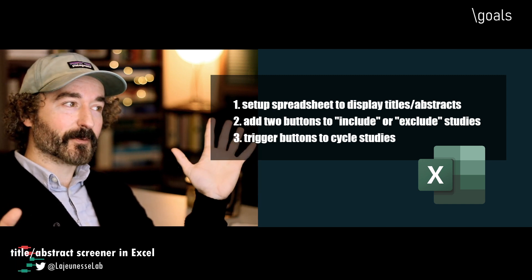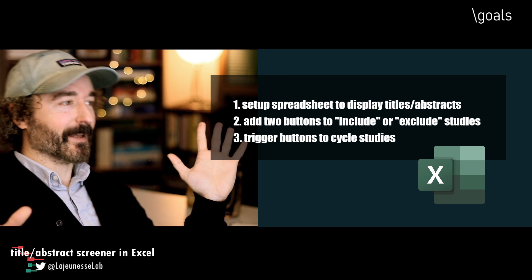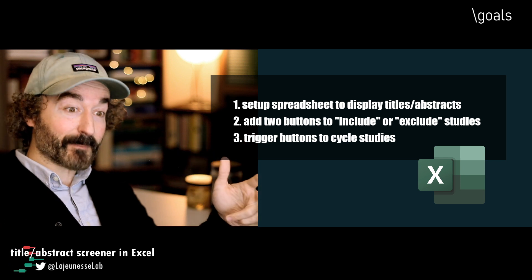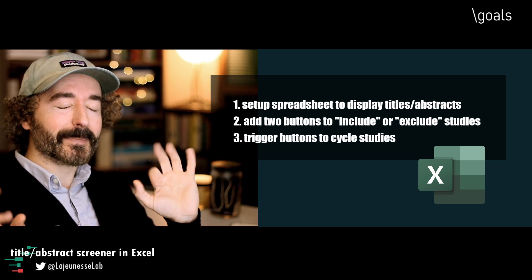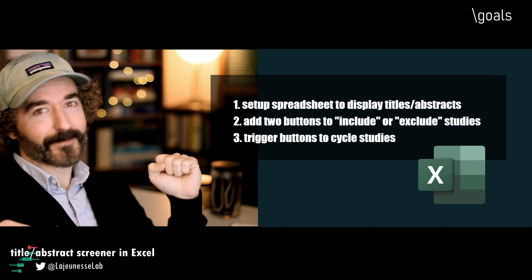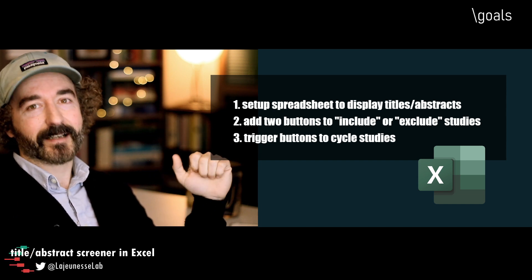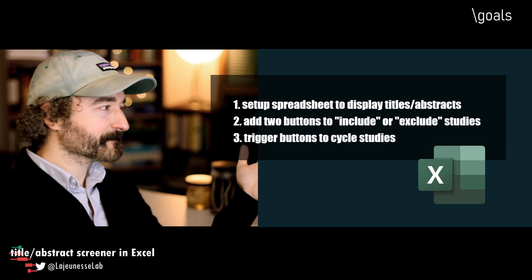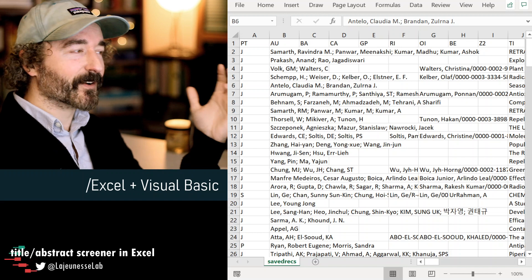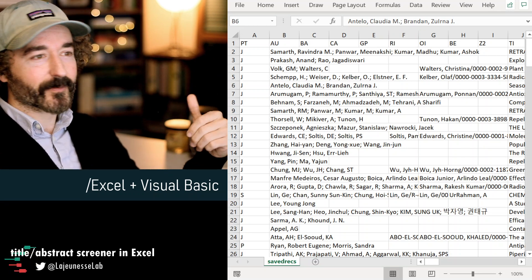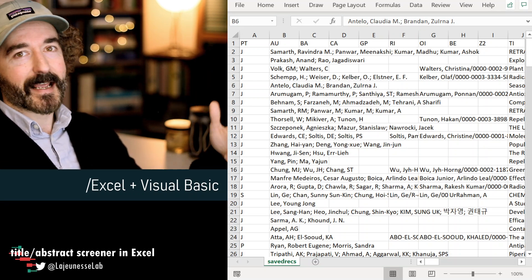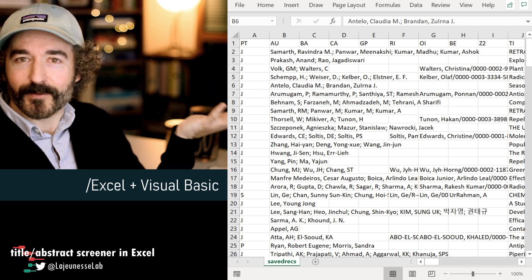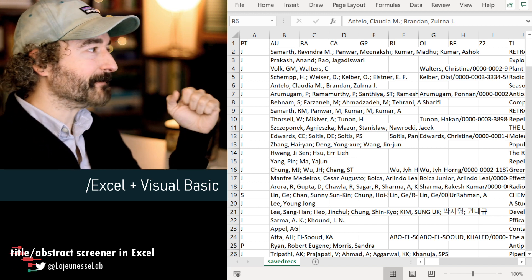Here are the goals: one, massage the spreadsheet and make it look nice so you don't go crazy reading bibliographic information of so many studies. Two, create buttons which will require a little bit of coding in Visual Basic — nothing too scary. And three, add functionalities to those buttons to keep track of your screening decisions. This is fairly standard stuff for abstract screeners: it presents you a title and abstract and you have little buttons to code whether to include or exclude the study.